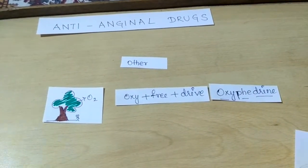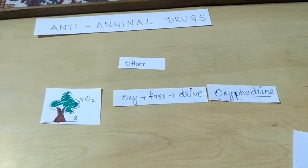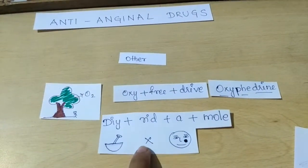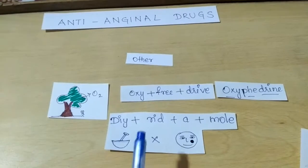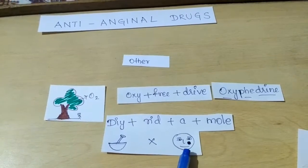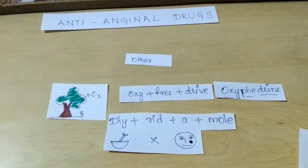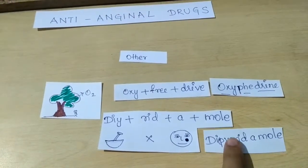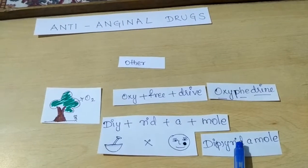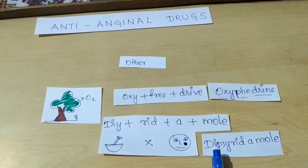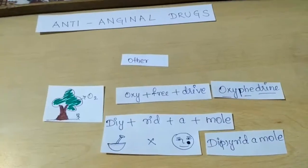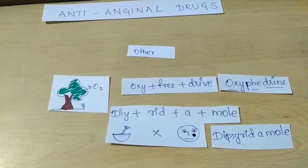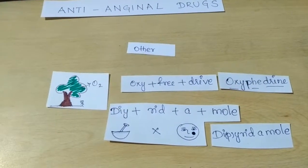Also, this tree provides materials for a DIY — that is 'do it yourself' — to get rid of a mole. This tells us about the drug DIY-rid-a-mole, where the P is silent: Dipyridamole. Friends, in another video we will cover the nitrates and the beta blockers. Thank you for watching.